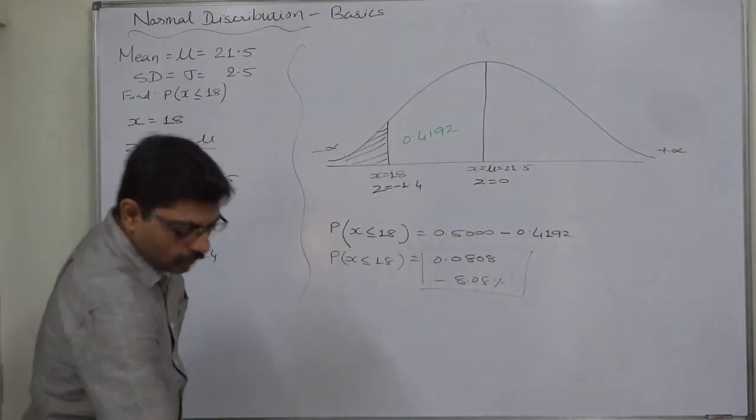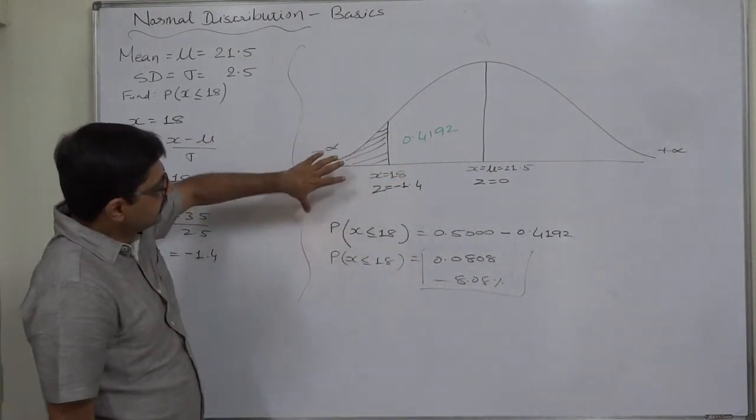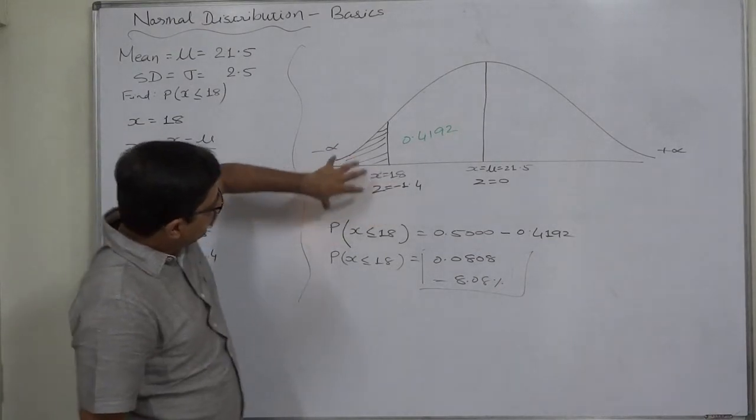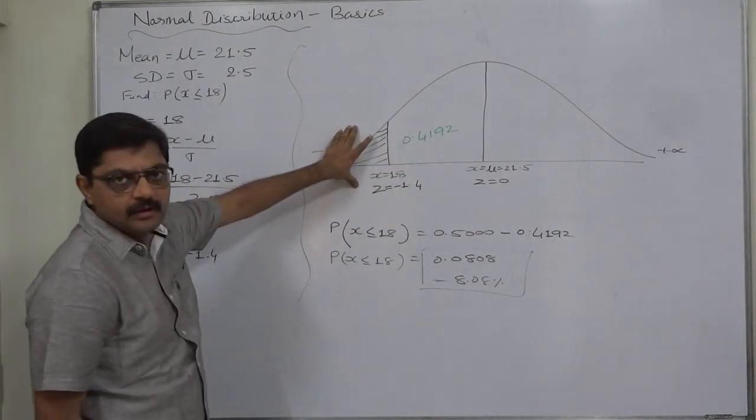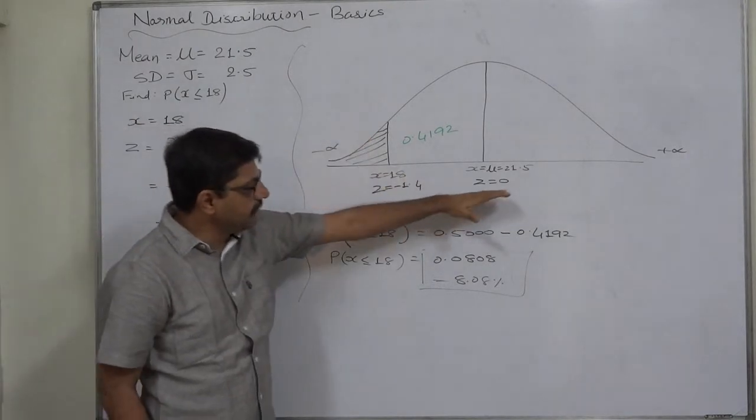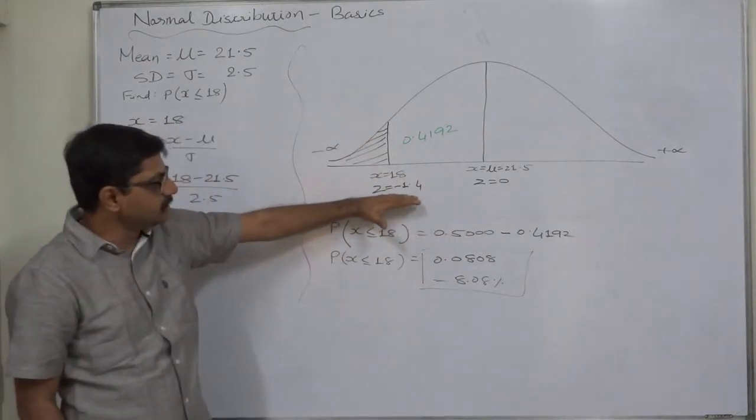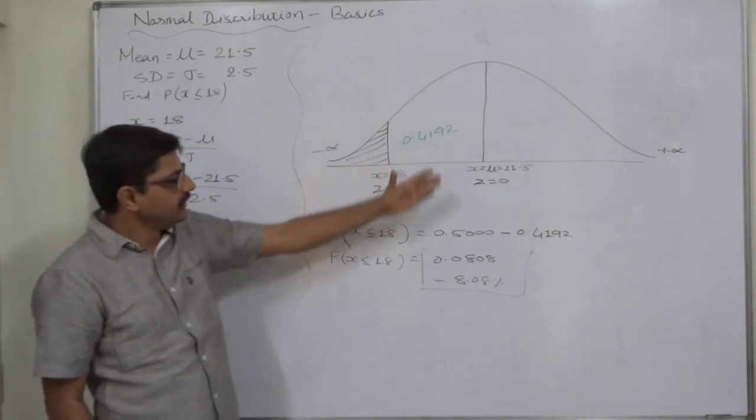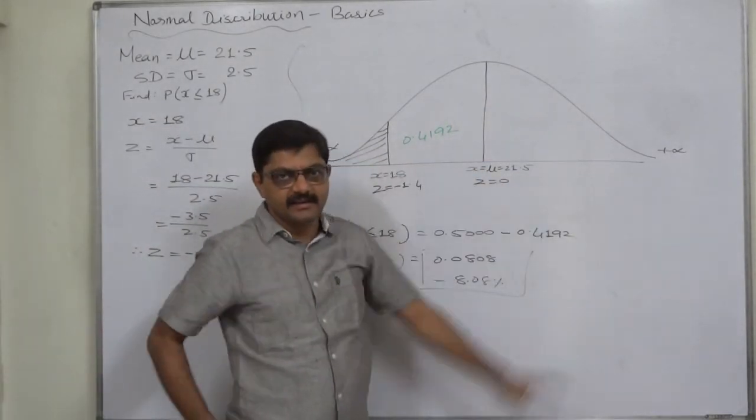So to find the area of extreme left hand side region, we have to subtract the area between z 0 and z something from 0.5. Now the same case was in case of right hand side area.